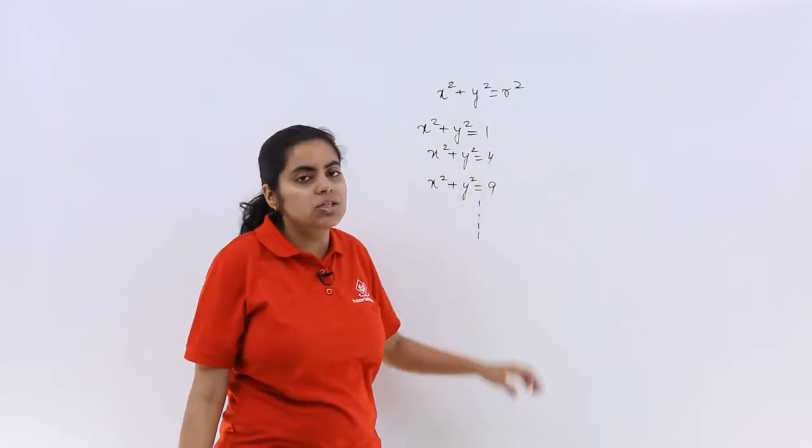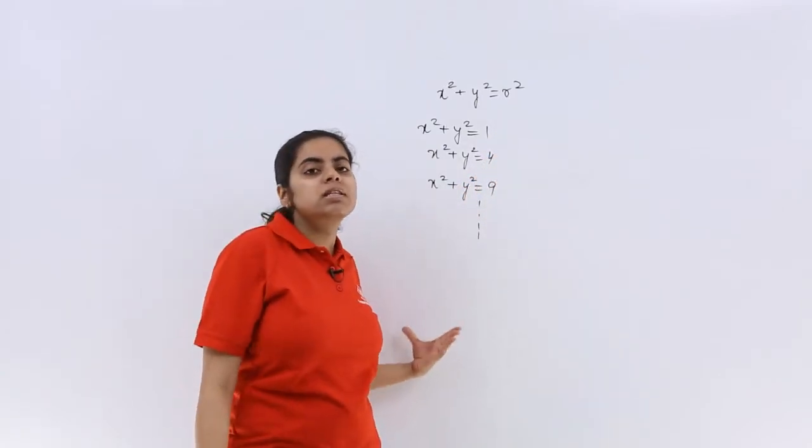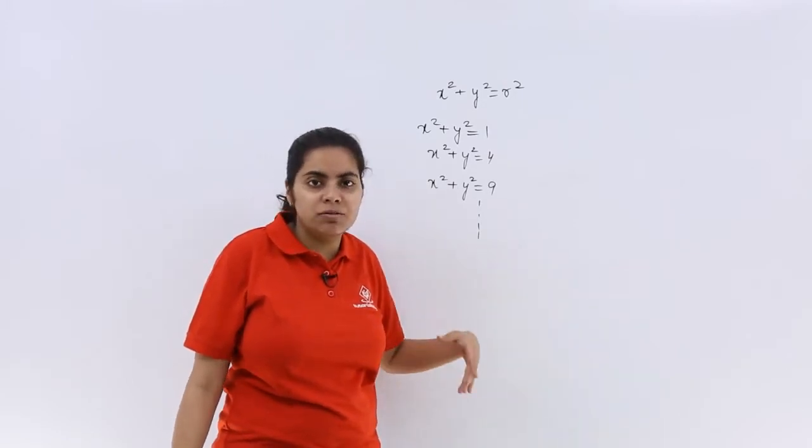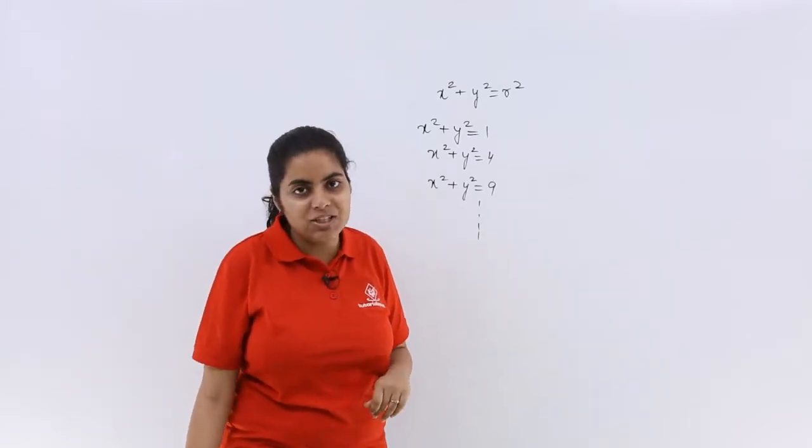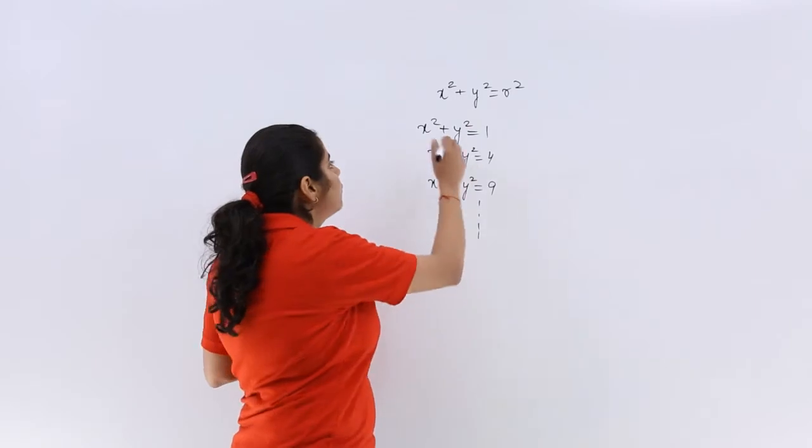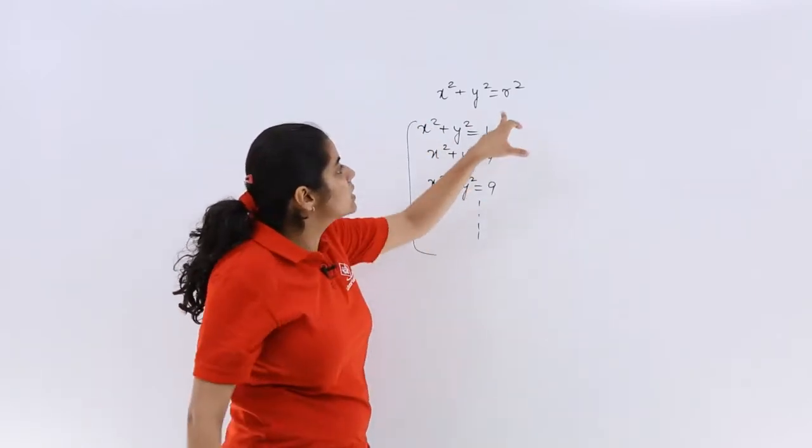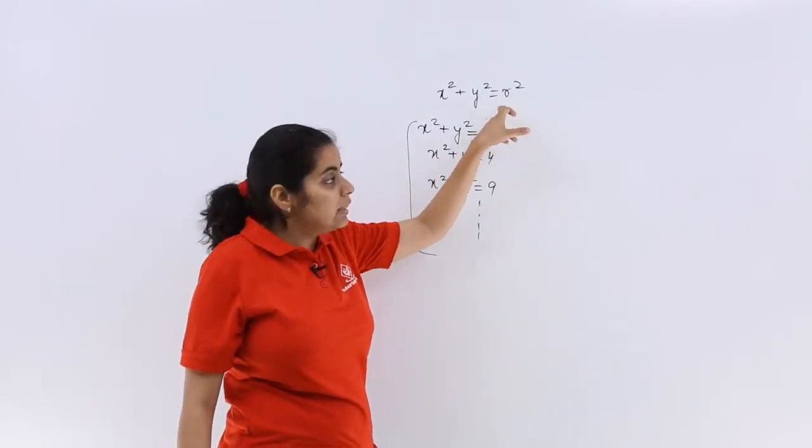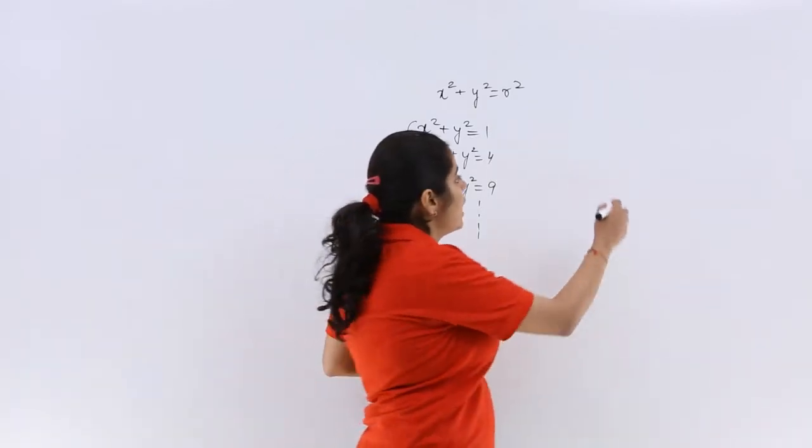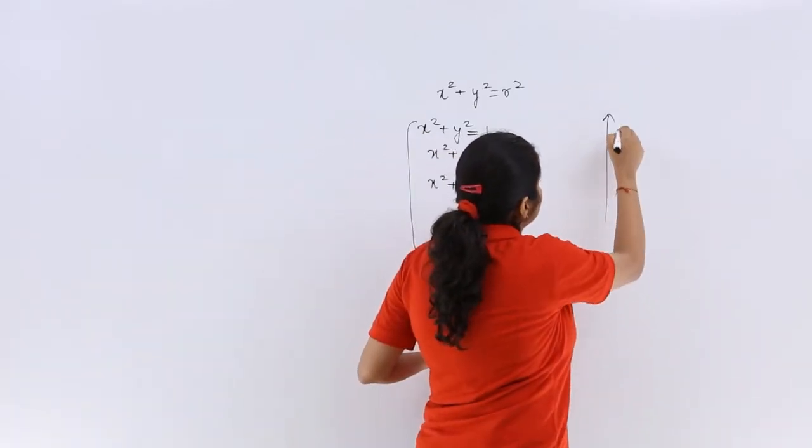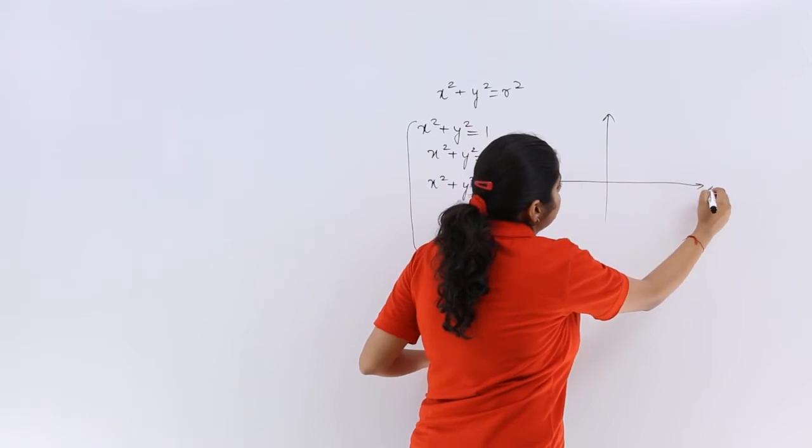Similarly, it could be x² + y² = 64, where the radius would be 8 units. These are different members of the same family, and if we plot them on the same graph, what will it be like?